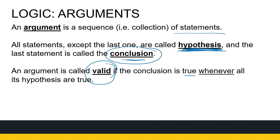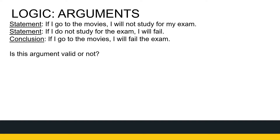We're going to look at two language examples using English. Remember, there's always a little bit of leeway when we do things in English — with mathematics it's much more clear, but we'll use this to get through the process. I've got two statements and a conclusion. My first statement is: if I go to the movies, I will not study for my exam. My second statement is: if I do not study for my exam, I will fail. Then my conclusion is: if I go to the movies, I'm going to fail.